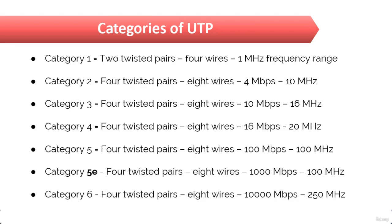Category 6a, where 'a' stands for augmented, is an augmented version of Category 6. It is characterized up to 500 MHz and has improved crosstalk characteristics, which allows 10 gigabits per second to be transferred at a frequency range of 500 MHz.